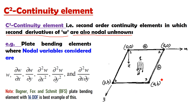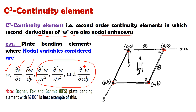For example, if you look at this rectangular plate bending element, at each node, the nodal unknowns include W (that is deflection), DW/DX and DW/DY (these are the bending slopes), and then the second order derivative of W, that is the twisting rotation D²W/DX·DY. If these second order terms are involved in the nodal unknowns, then those elements are called C2 continuity elements.